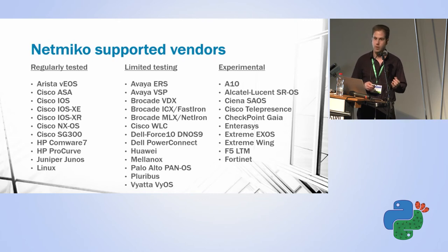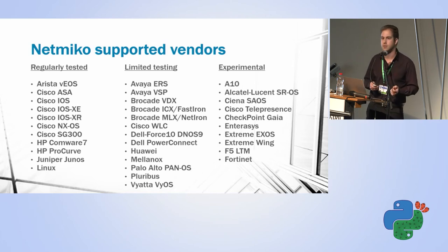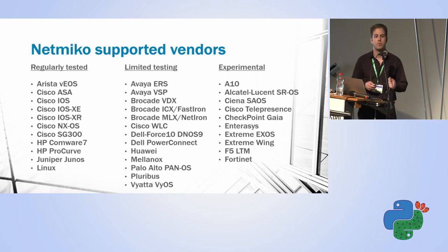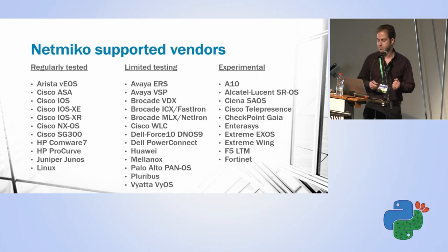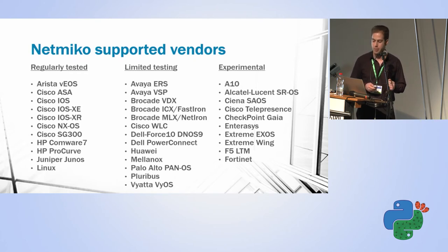The advantage of NetMiko over Paramiko is that it supports a lot of vendors — meaning the library knows how to interact with their CLI. For example, with Cisco IOS, it knows if an output indicates a problem. It knows it needs to enter configuration mode to send a configuration line. Most big vendors are regularly tested: Cisco, HP, Juniper, etc.